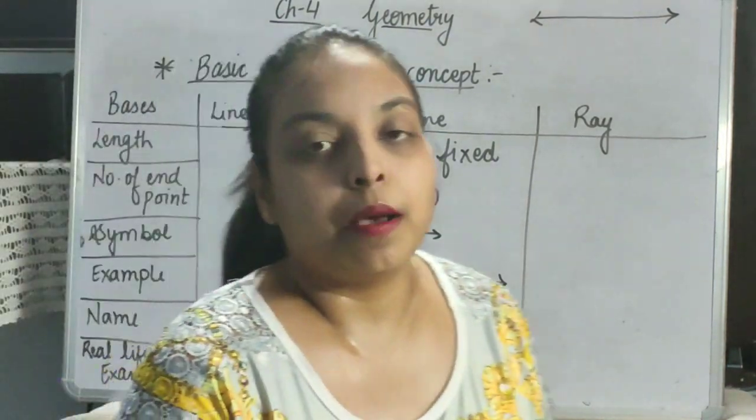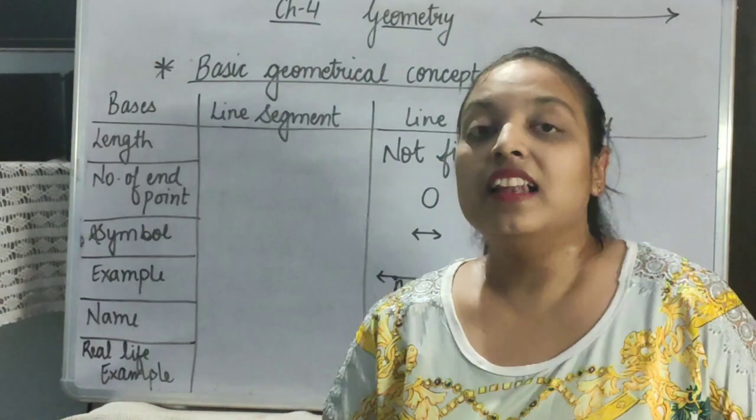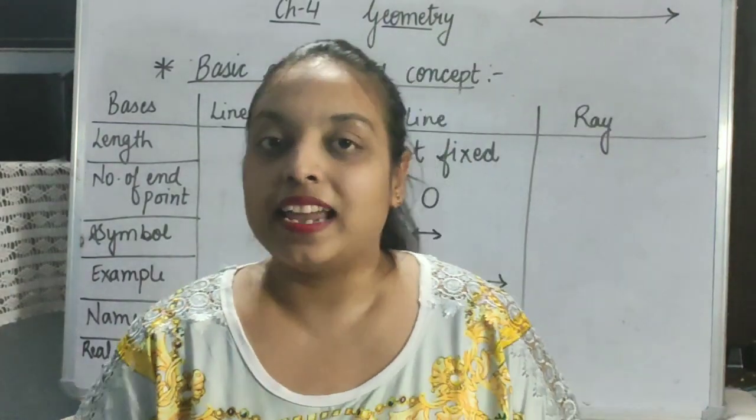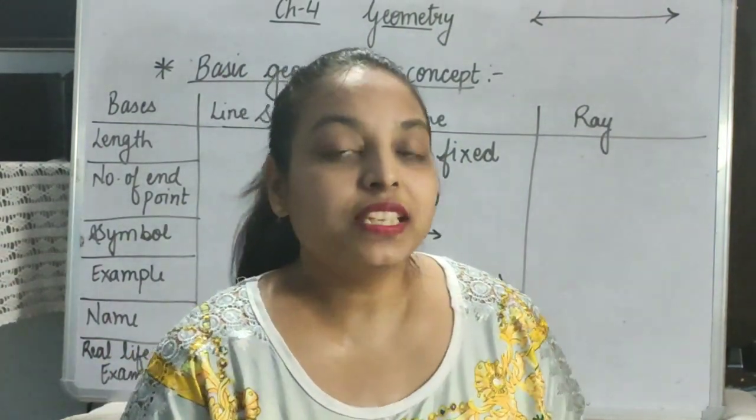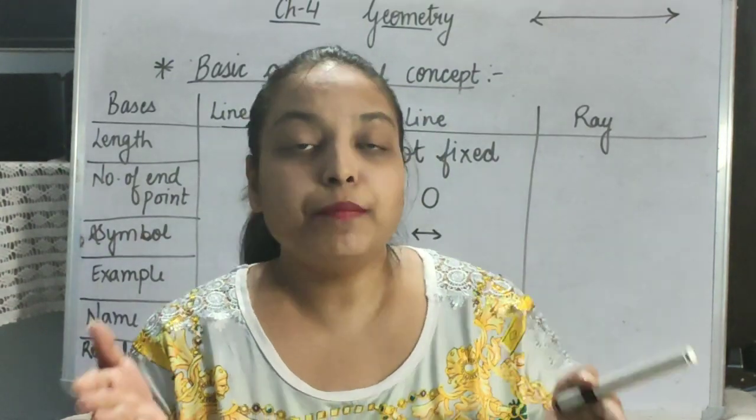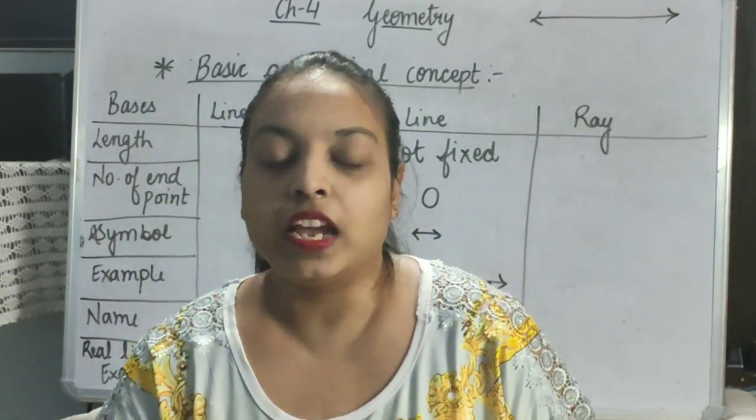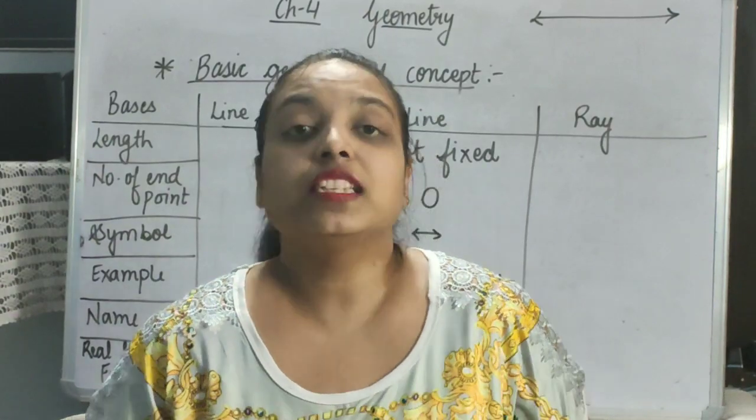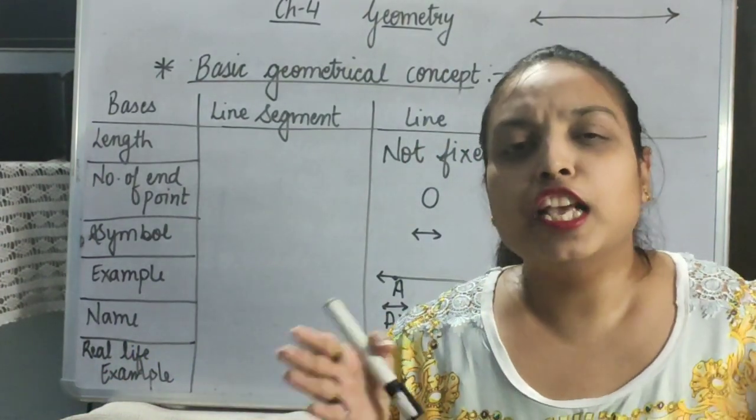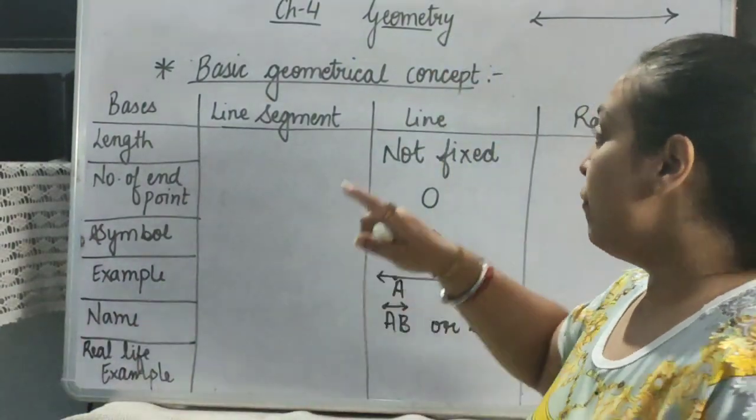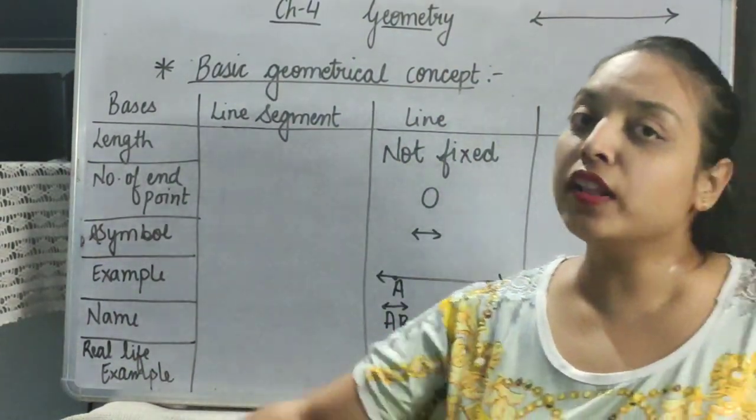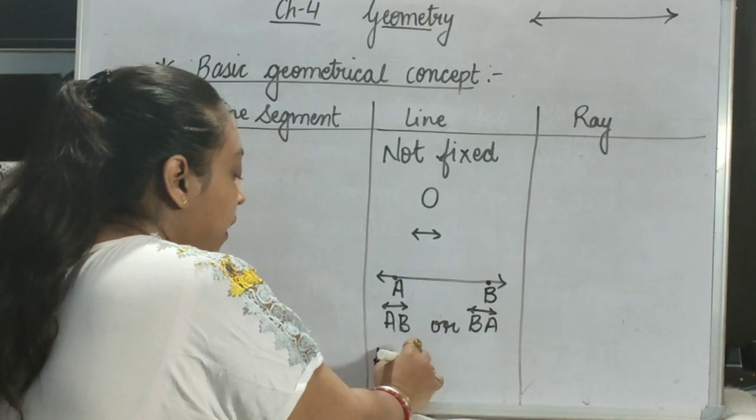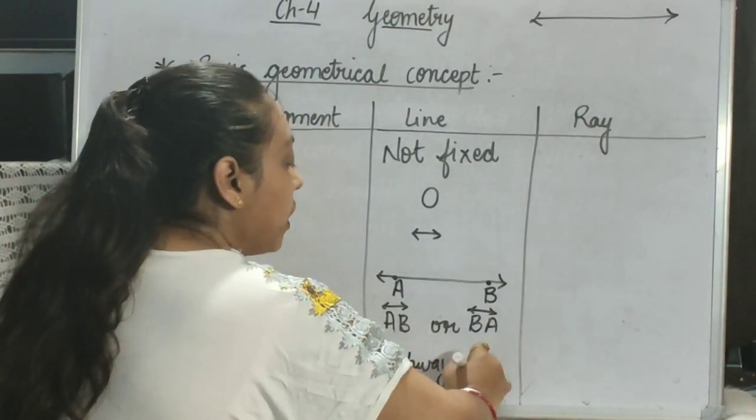Now, we will learn about the real life example. What do you mean by real life example? Real life examples that we can see in reality. So, for line, we have two examples like highways and roads. Do you ever see highways? If I am telling you to stand in between the highway and will tell you to see your left and right. So, what can you see there? We cannot able to see the ends of that highway. It is moving continuously. So, if it is moving continuously in both the directions, this is line. So, we can say the real life examples of line are highway or road.